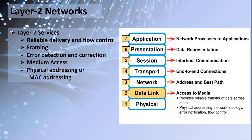Before we start, let's recap the OSI model and talk about the functions of the data link layer. The Layer 2 services provided by the data link layer are reliable delivery, flow control, encapsulation and decapsulation of network packets into frames, error detection and correction, media access, and physical addressing — which is also called MAC addressing.